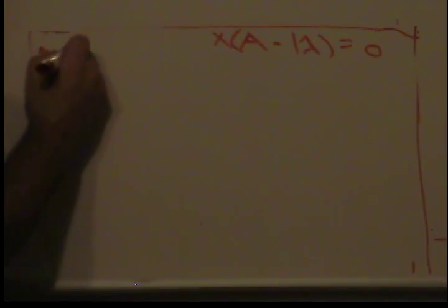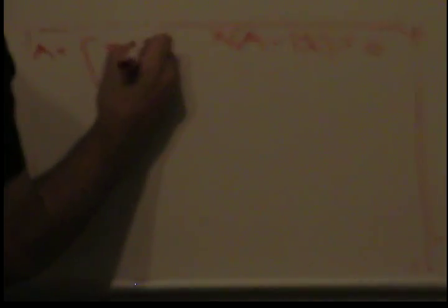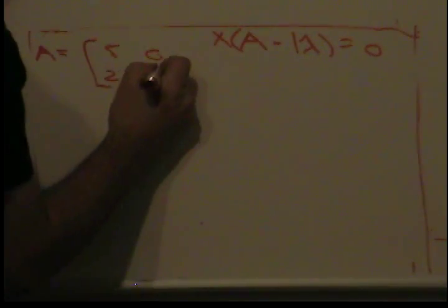This is a two by two matrix. I'm gonna say A equals 5, 0, 2, and 1.